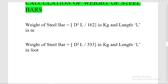The formula to calculate the weight of a steel bar: if we have the length in meters, then the formula is D² × L divided by 162, which gives us the weight in kg. Here D is the diameter of the steel bar and L is the length of the steel bar.